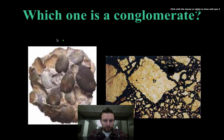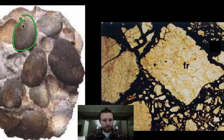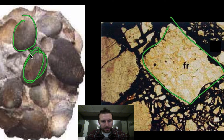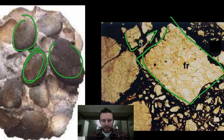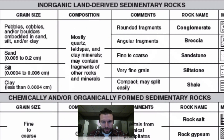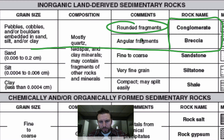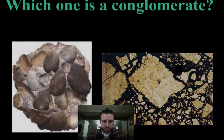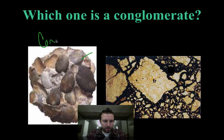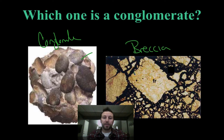Looking at these two samples, we can see pretty large sediments in both, but there's a key difference. One has rounded fragments and the other has jagged, angular edges. Going back to our reference table, we can see pebbles, cobbles, and boulders can form conglomerate or breccia. The rounded fragments make this conglomerate, and the angular fragments make this breccia.